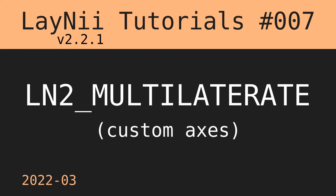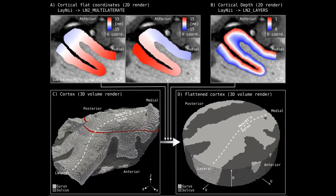Hi. In the previous video, I have showed you how to compute the flat coordinates, u and v axes, for a cortical gray matter chunk. So first, let's remember the components.